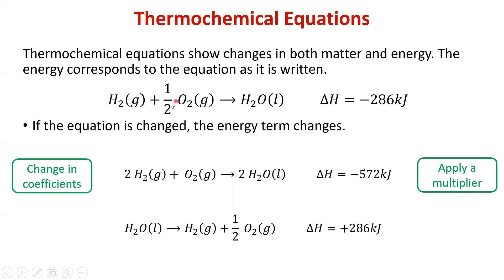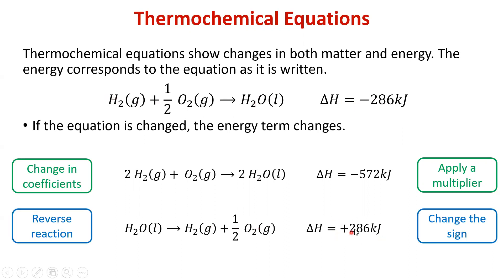If we flip the reaction around — making hydrogen and oxygen the products and water the reactant — the reaction that was exothermic becomes endothermic. If producing one mole of water gives off 286 kilojoules, then decomposing one mole of water requires absorbing 286 kilojoules. If we have a different amount than one mole of hydrogen, we can use stoichiometry to find how much energy is released or absorbed.